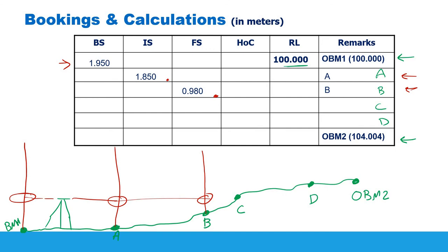Just to remind you: when you set up the level, the first reading should be done over a benchmark or a point whose reduced level you already know — in this case Benchmark 1 at 100 meters. That first reading is called a back sight. The last reading from that station is called a fore sight, and between the back sight and fore sight any reading you make is called an intermediate sight — in this case over A.